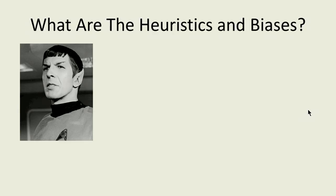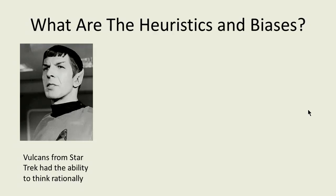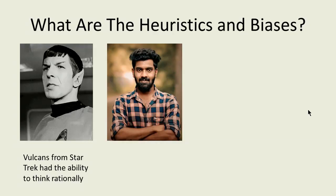In the Star Trek show, the rationality of the Vulcans was used to highlight human limitations in this area. Compared to the fictional Vulcans, humans have a limited mental capacity to capture and process all of the world's complexity. Instead, people construct a simplified model of reality and then use this model to come up with judgments. This is called bounded rationality.